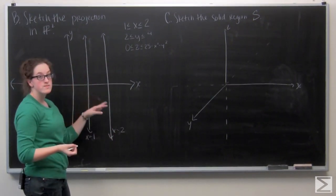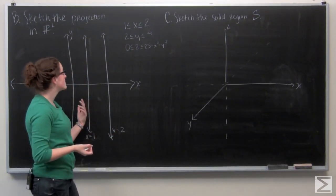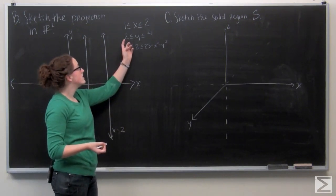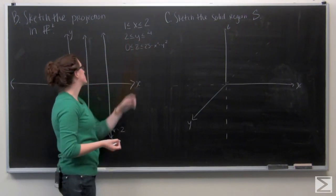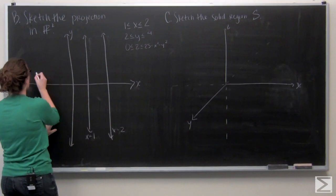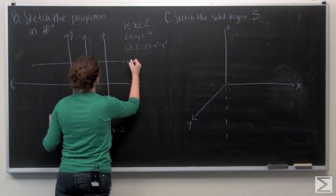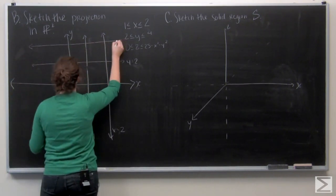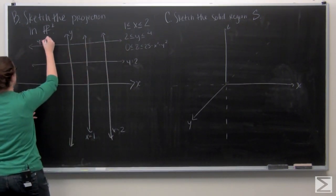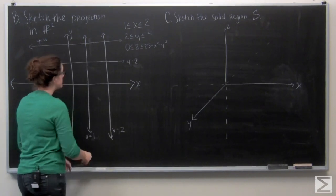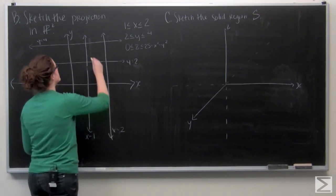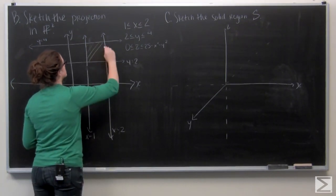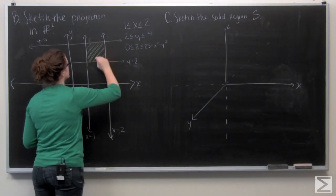And x equals 2. Since we're in R2, the other one we're going to sketch is the y component. We have y going from 2 to 4. Let me go ahead and draw y equals 2 and y equals 4. Our projection into R2 is going to be this rectangle that those two lines enclose.